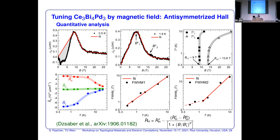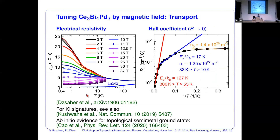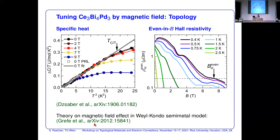Q: When you say the Weyl nodes annihilate, do they shrink in distance in k-space or decrease in intensity? A: Experimentally the response vanishes. From the theoretical work on the periodic Anderson model on the diamond lattice, the Weyl nodes are studied in great detail moving in momentum space in certain directions — which may explain the dips in the Hall response — until they all meet at the Γ-point and annihilate. This is consistent with our data, though we cannot prove this directly from experiment.